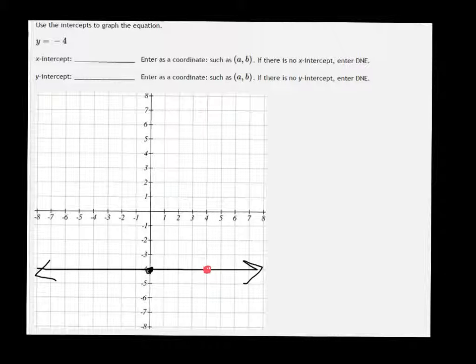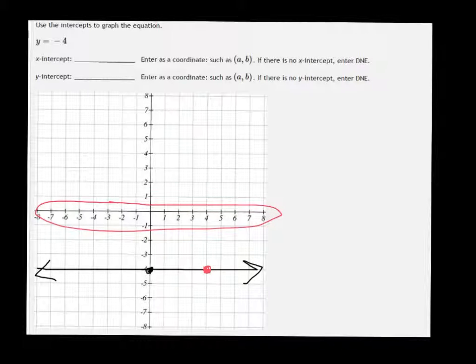Now your x-intercept, that's where it crosses the x-axis, and this line doesn't cross the x-axis, the one that I'm circling in pink here. It doesn't cross that, so you just put x-intercept, put DNE.